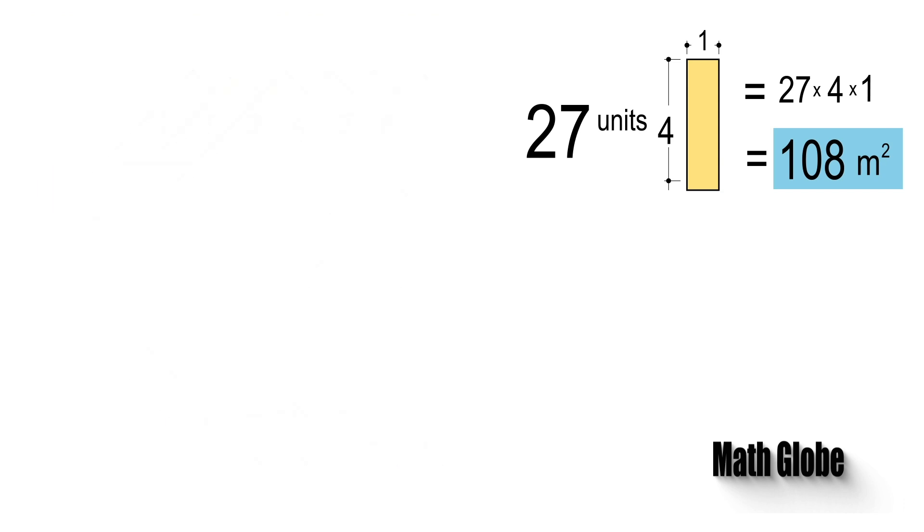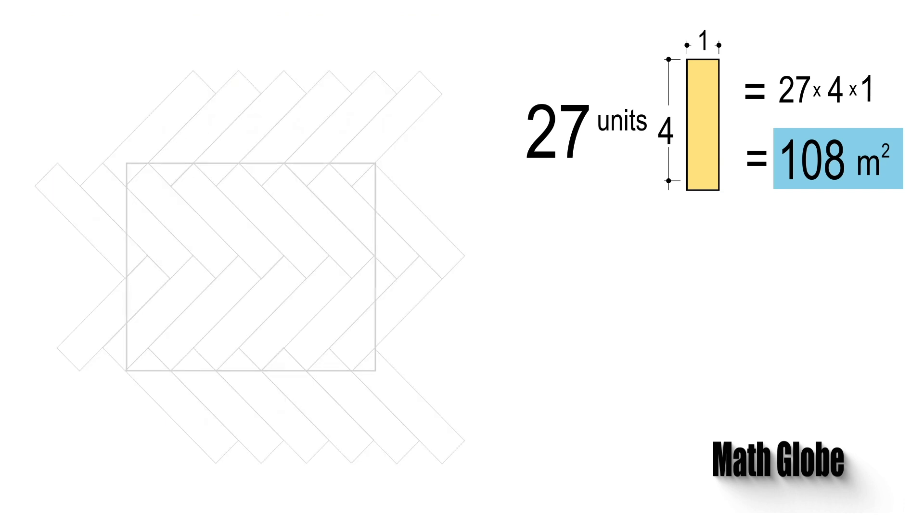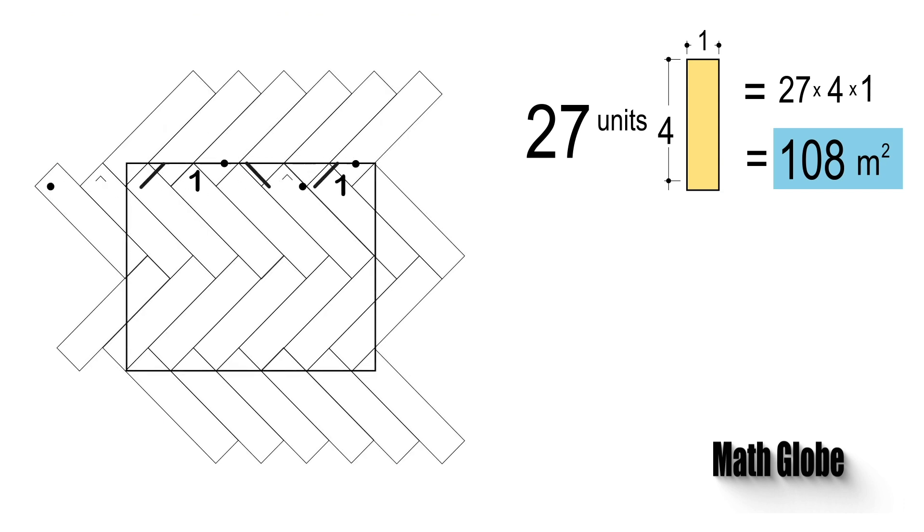We now need to find the area of the other shape. Analyzing the long side, as you see we can form small isosceles right triangles having side lengths of 1 unit. Therefore, from Pythagoras theorem, the hypotenuses of these will be square root of 2.